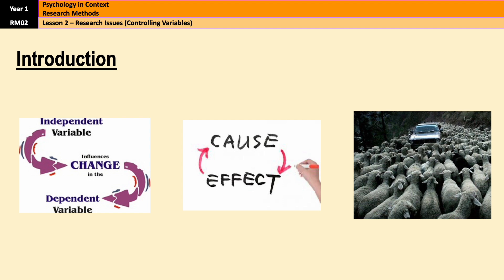If you remember from lesson one, the key to an experiment is that an IV is manipulated to see how it affects the DV. The only thing that should influence the DV is the IV. If there are any other variables that might potentially interfere with or obscure the relationship between those two variables, those need to be controlled, minimized, or even removed entirely so that the validity of the results remains intact.